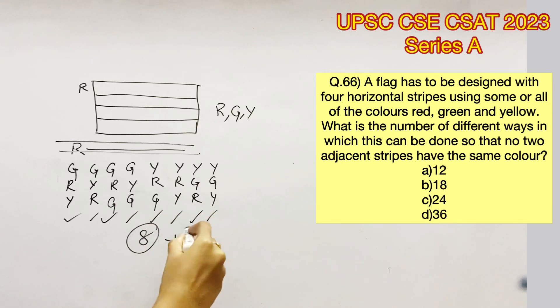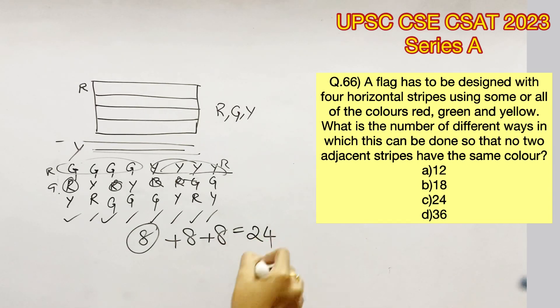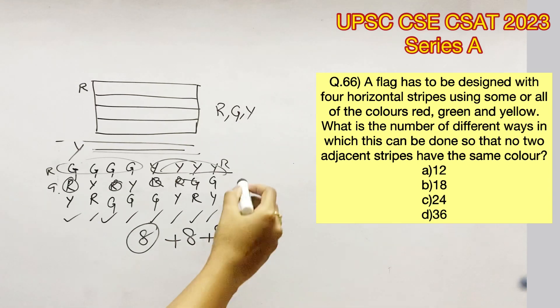Now if we change the first stripe to green, there will be another eight possibilities where these greens are replaced by red and the reds replaced by greens. If you change the first stripe to yellow, you get another eight possibilities. Therefore, there are a total of 24 possibilities, so option C is the right answer.